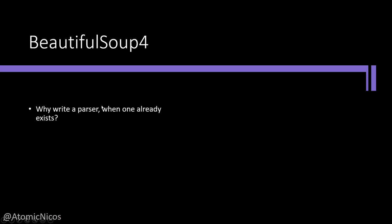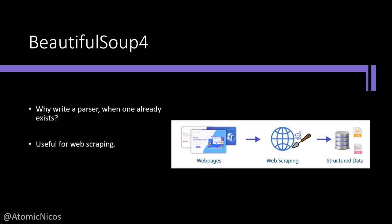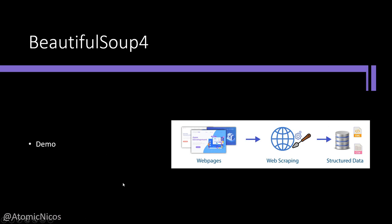This is where we get to part two — BeautifulSoup4. BeautifulSoup4 is an HTML parser. Writing a parser for HTML is chaotic and horrible, so we're going to use one that already exists. BeautifulSoup4 is very useful for web scraping — you download a webpage and try to find important information in it. It could be email addresses, phone numbers, or tables of data. Those tables of data are then transformed into a form of structured data, which is what we're working with today.